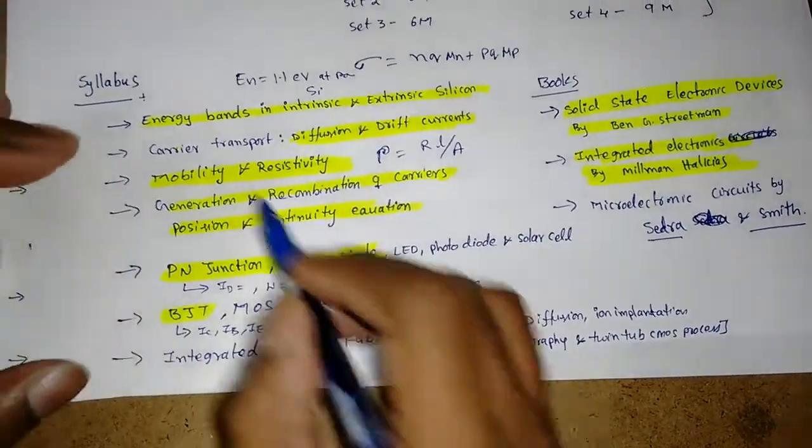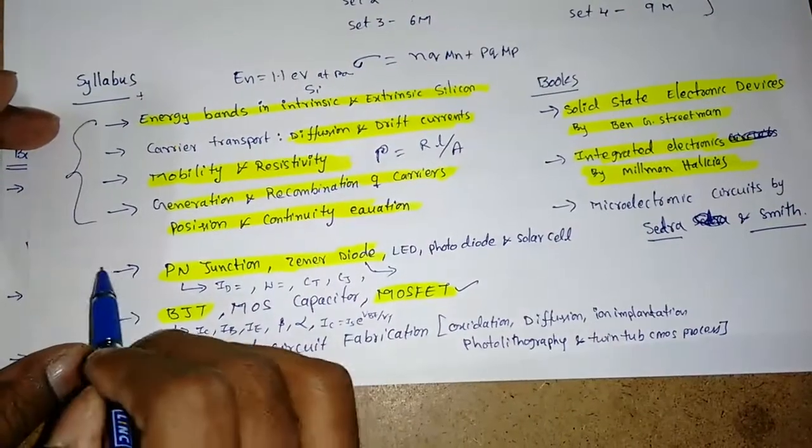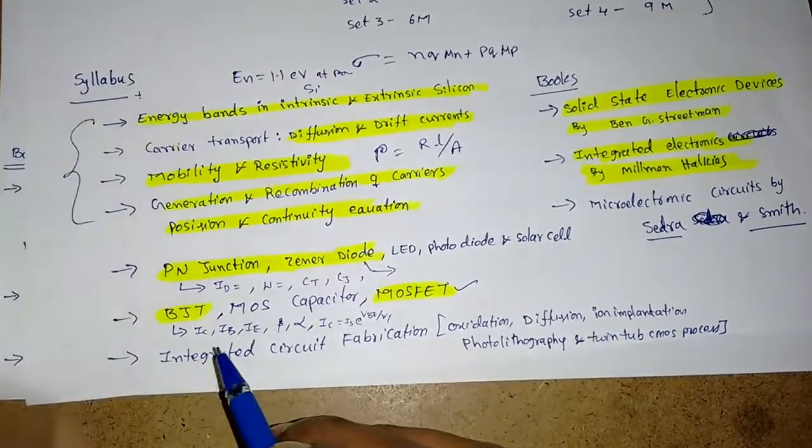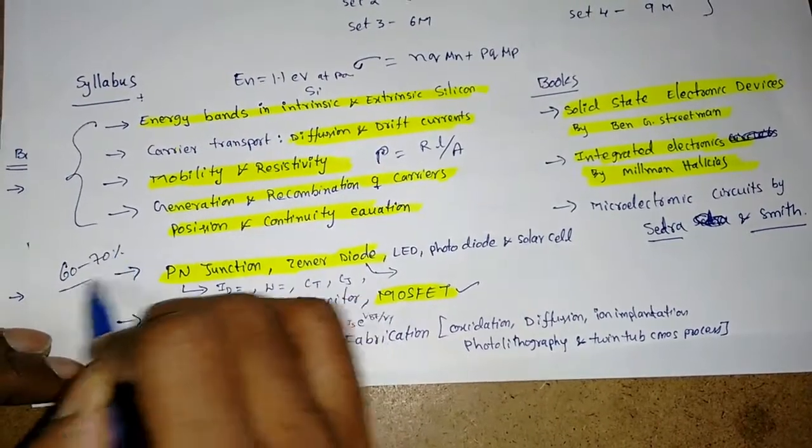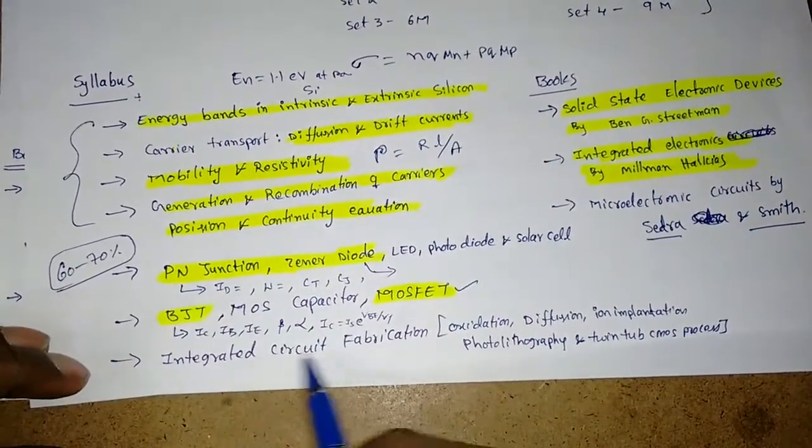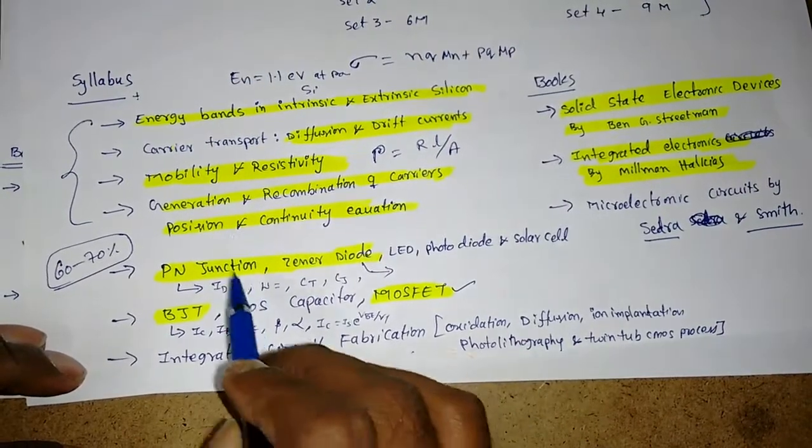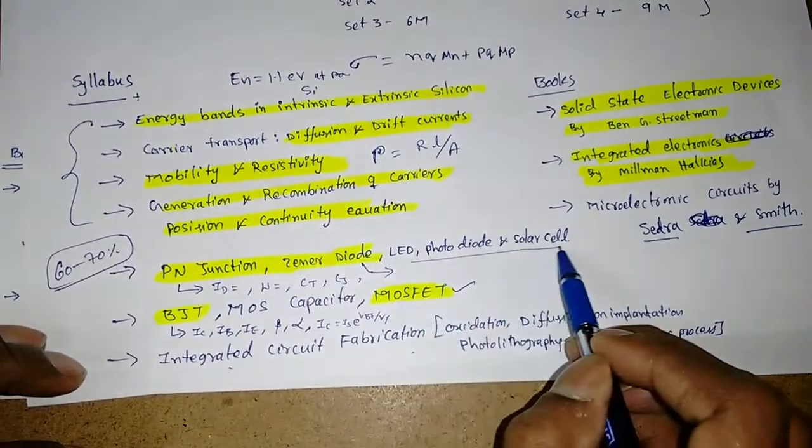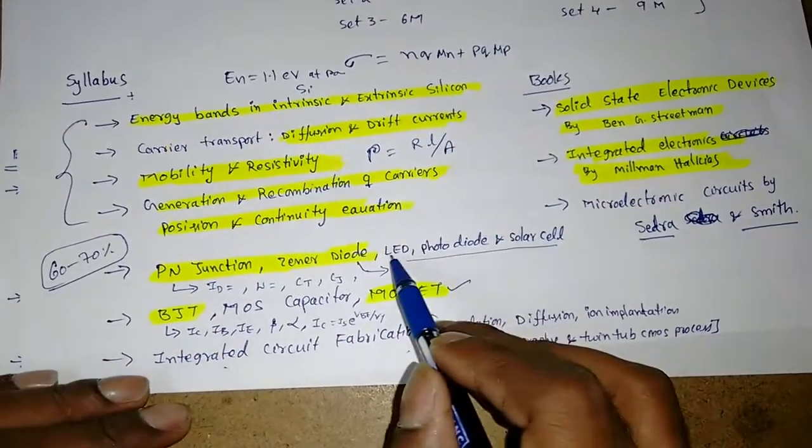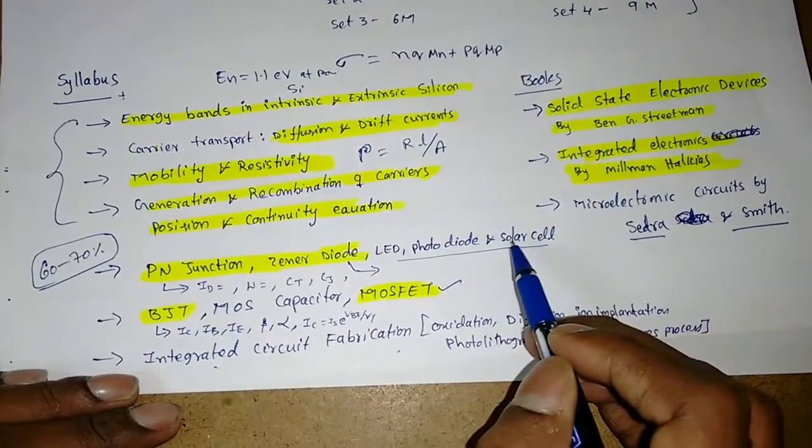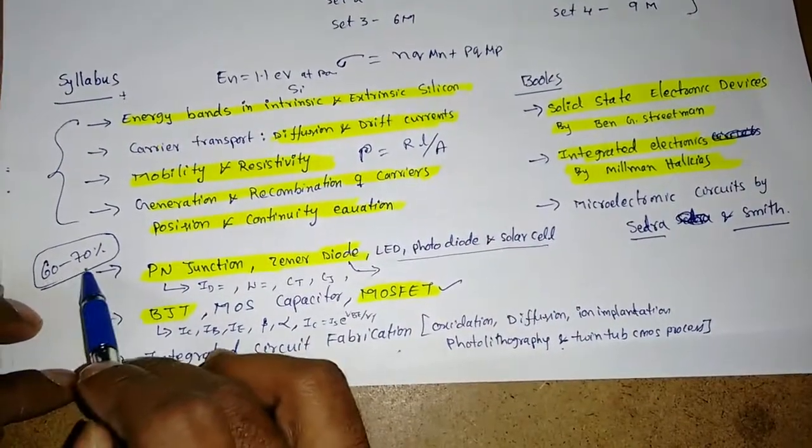If you know semiconductor concepts, as well as PN diode, BJT, and MOSFET, we can get at least 60 to 70 percent of the marks from these concepts only. The remaining, rarely we will get from integrated circuits. Sometimes we will get LEDs and photodiode concepts. At the last, we will go briefly—what is LED, what is photodiode, what is solar cell. But if you know this concept very well, we can get at least 6 to 7 marks.